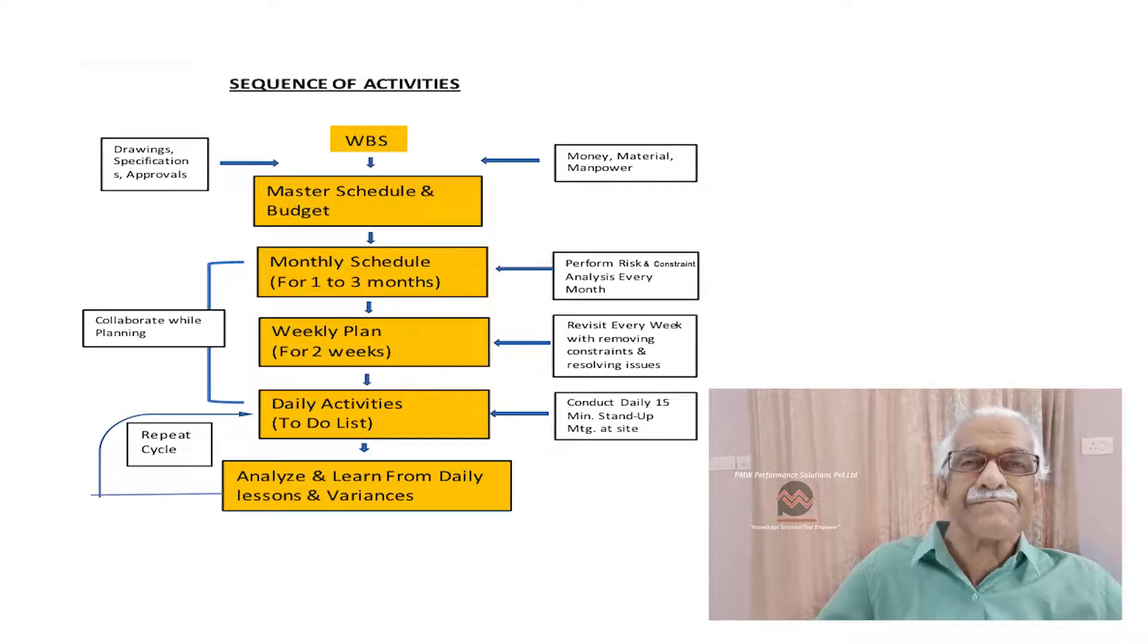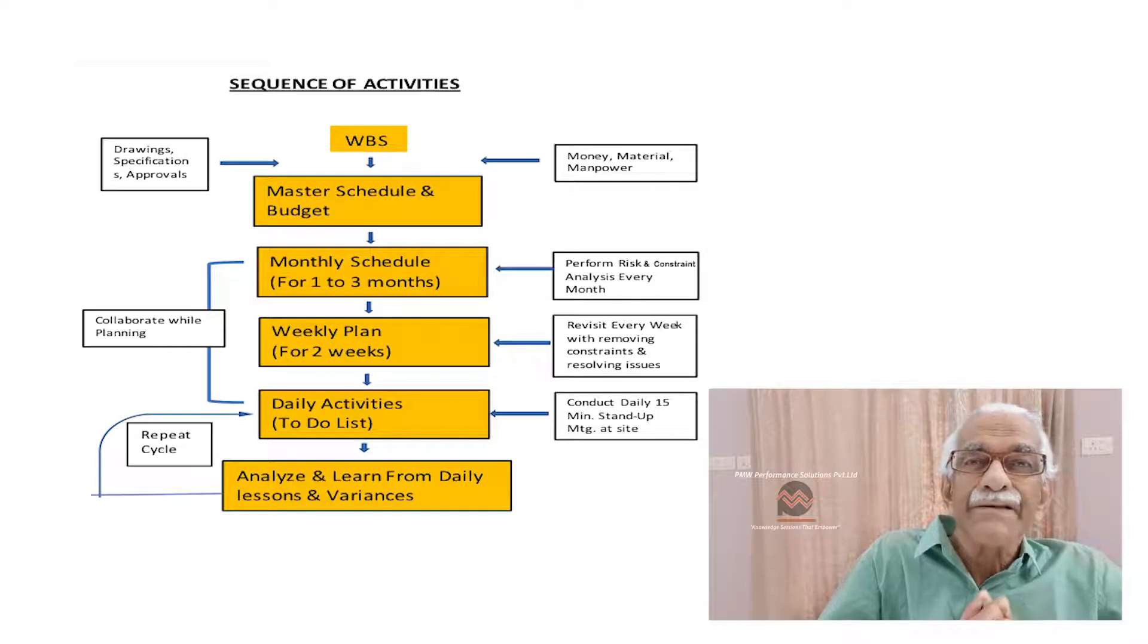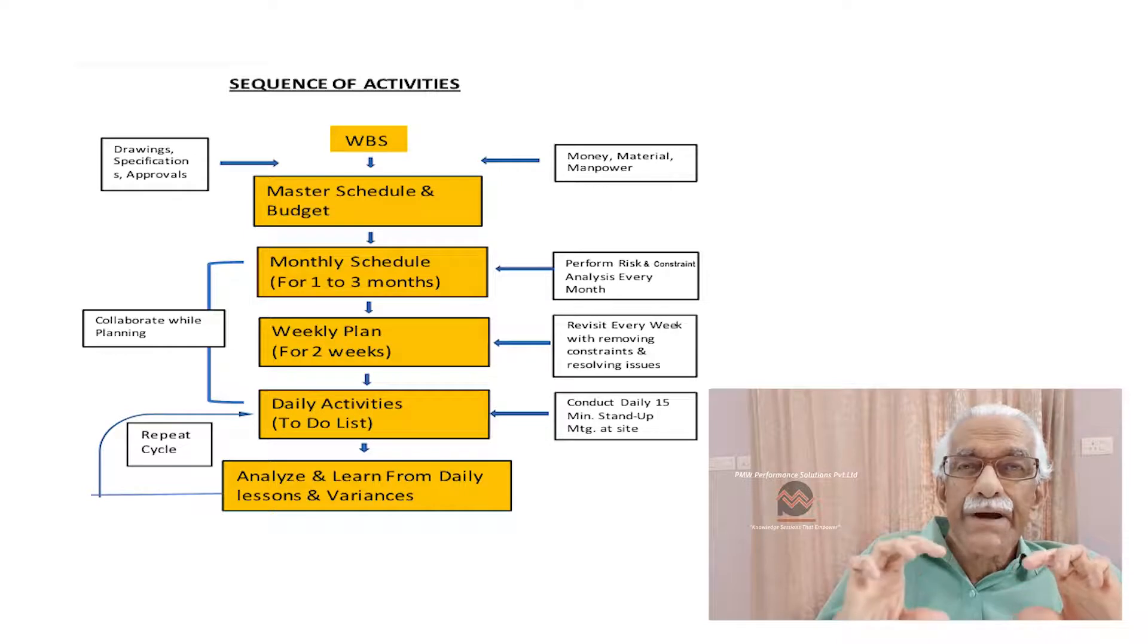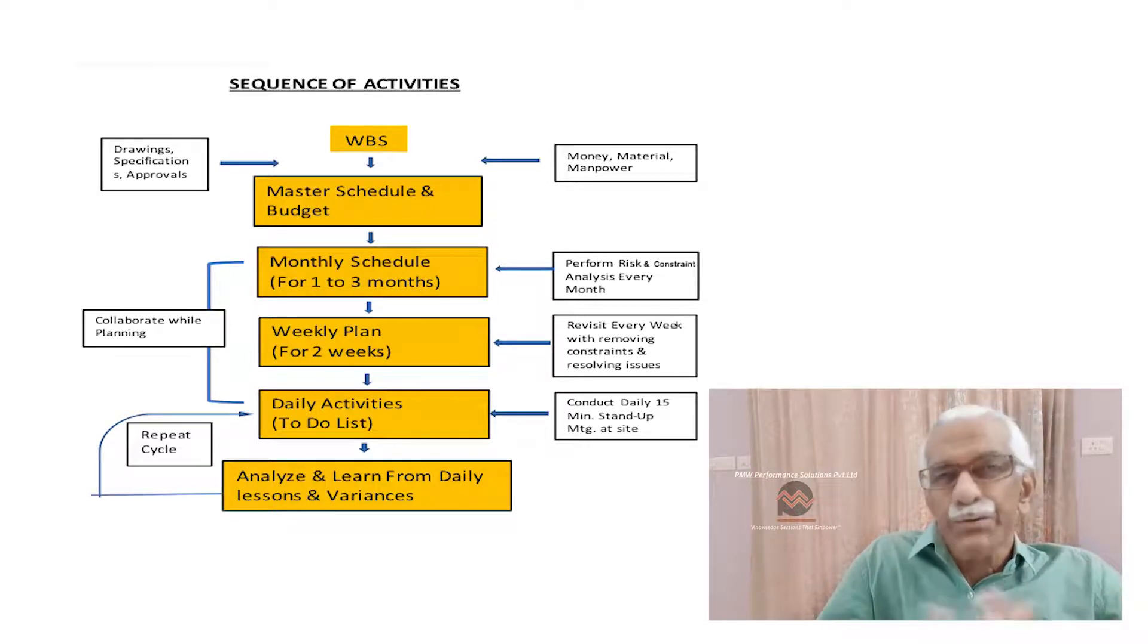Step number five. Break that monthly plan into weekly schedules. Now, in that weekly schedule, you need to micro plan the activities because now we are going into a stage where you have to execute those activities. Micro plan for one week or maybe for two weeks. You can even make a two week plan. Now, don't forget, this is a breakdown of the monthly schedule.